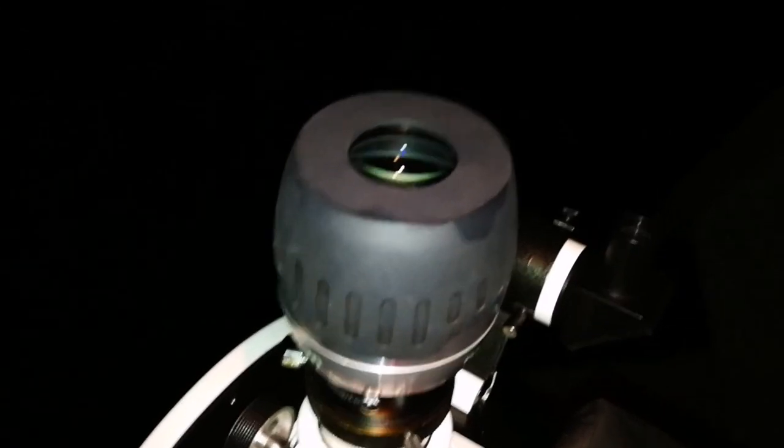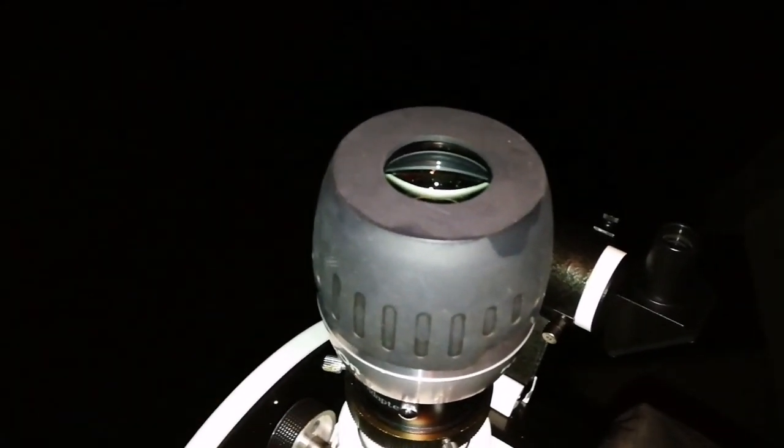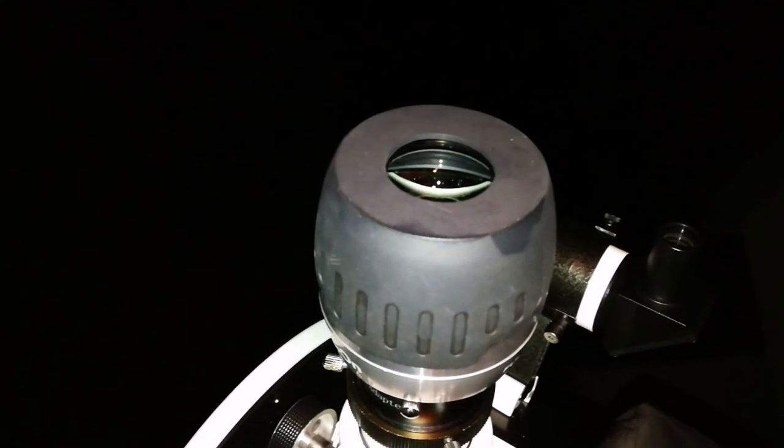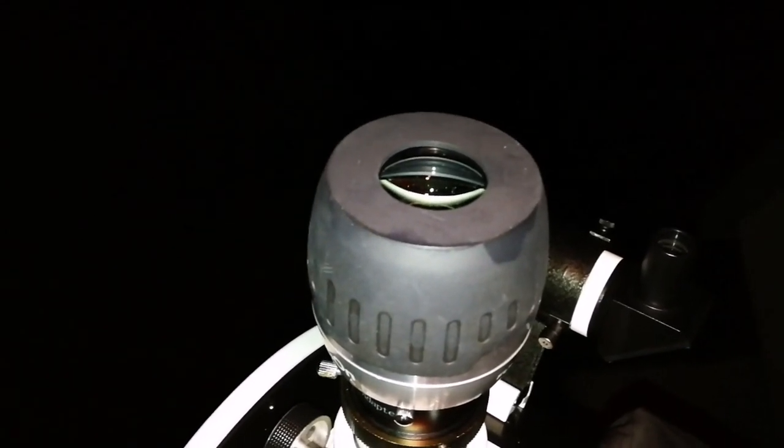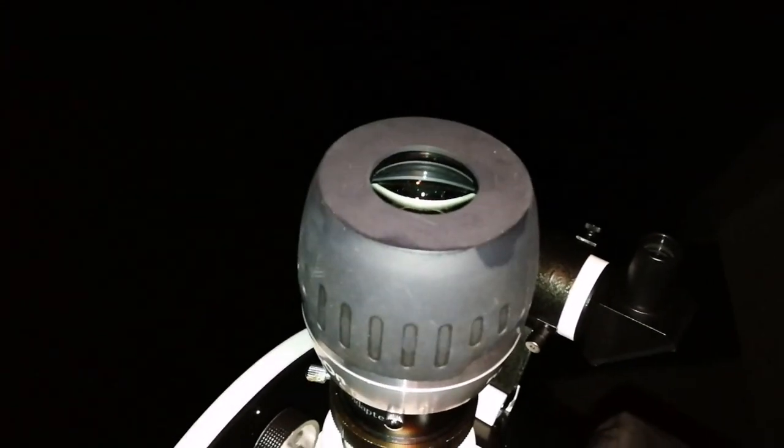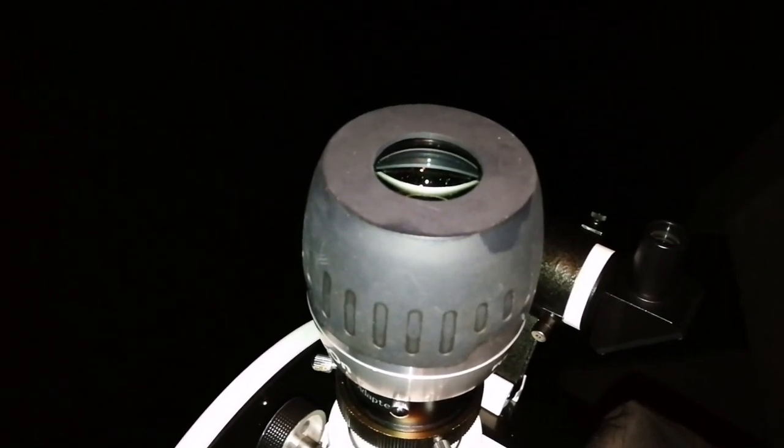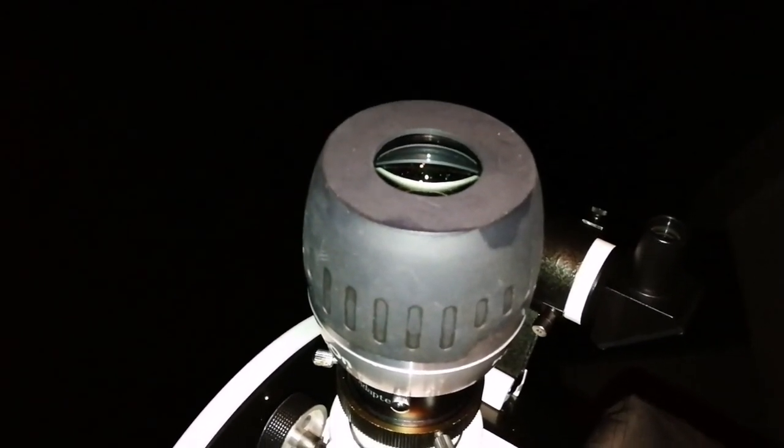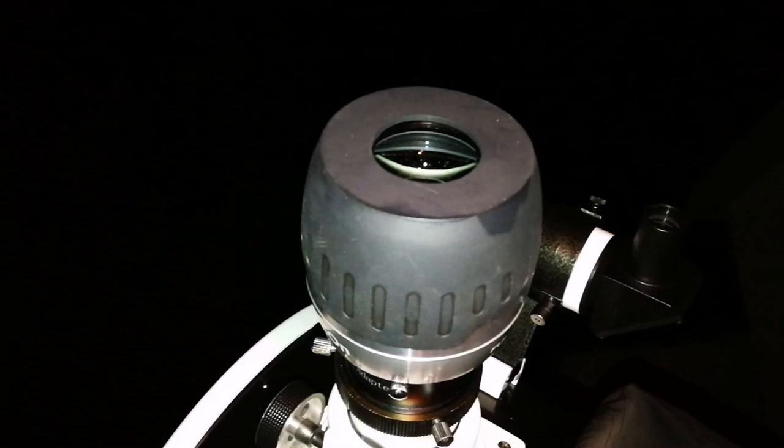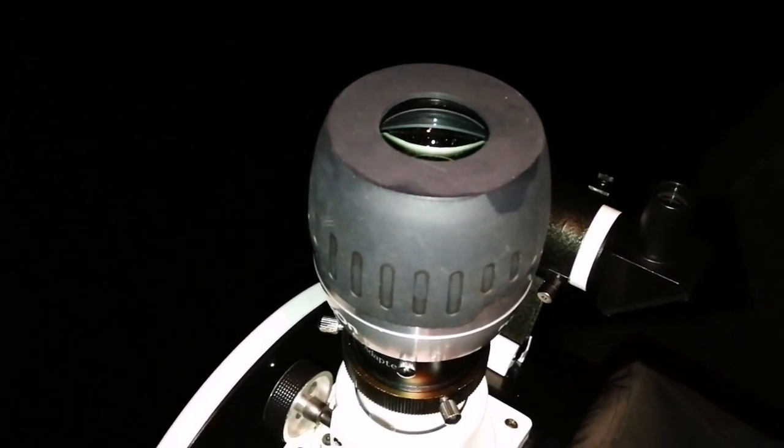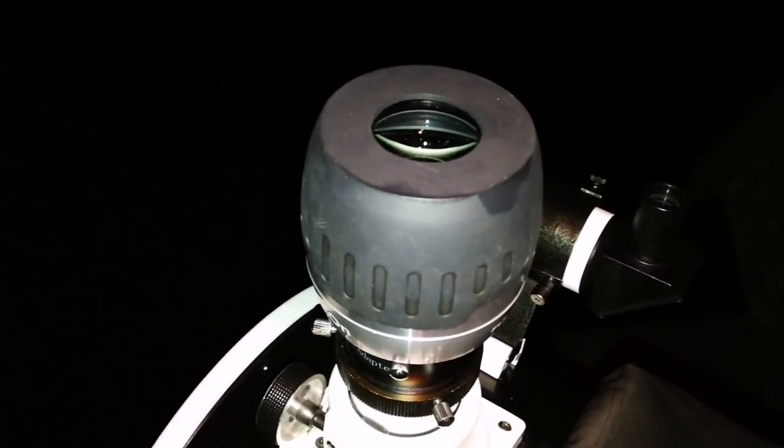The only problem is that I can see something like reflections, two reflections probably because of the filter. Yeah, reflection from the inside of the filter. Other than that, it's perfect. You can see the whole vastness of the nebula with this oxygen-III filter.